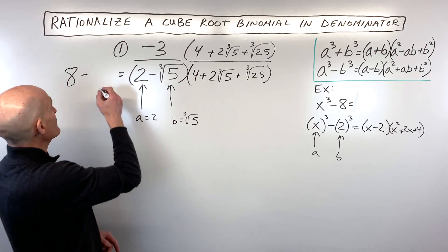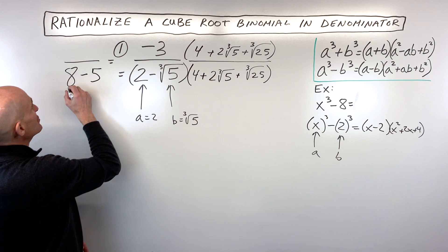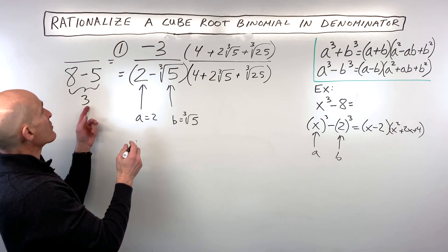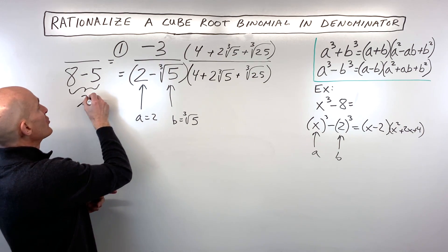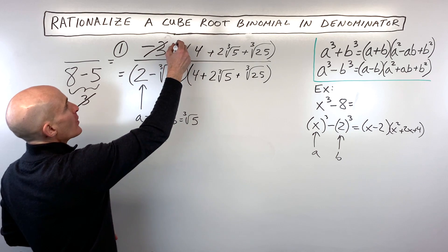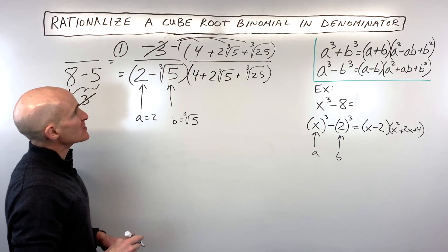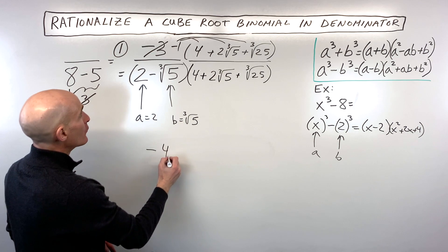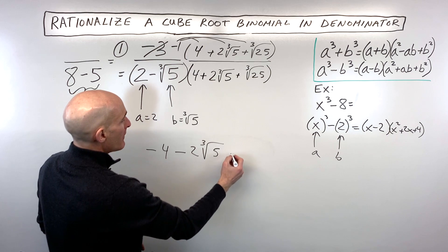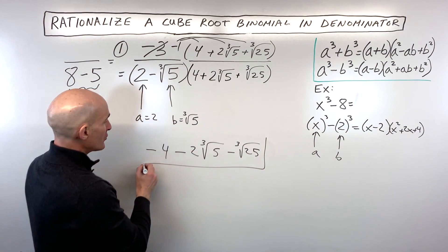And the cube root of 5 cubed is just 5. So the denominator comes out to 8 minus 5, which is 3. The 3 in the denominator and the 3 in the numerator cancel, leaving us with negative one. So we distribute negative one to the remaining terms in the numerator, giving us negative 4 minus 2 times the cube root of 5 minus the cube root of 25.